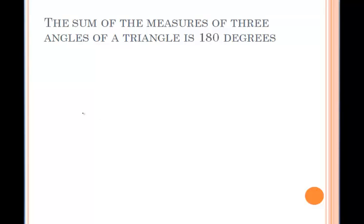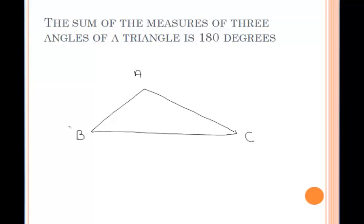Let's talk about why the sum of the measures of the three angles of a triangle is 180 degrees. I'll start by drawing a triangle and labeling it ABC. We want to prove that the measure of angle A plus the measure of angle B plus the measure of angle C equals 180 degrees. According to the parallel postulate, there exists exactly one line through point A that is parallel to line BC. So we can draw something like this. Because of the straight angle at the top, we can say that those three angles — 1, 2, and 3 — must add up to 180 degrees.